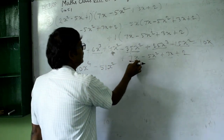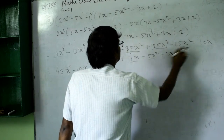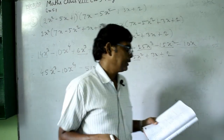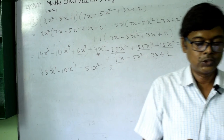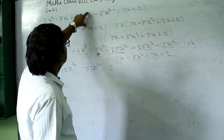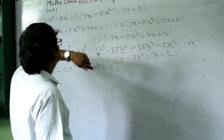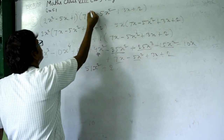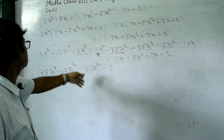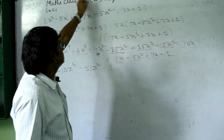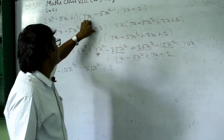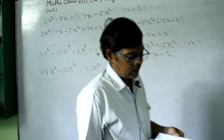After combining all like terms, the x terms cancel out (10x minus 10x equals 0), leaving the constant 2. The teacher notes that the problem likely has a typo — 7x should be 7x³ based on the answer in the book. Students should substitute 7x³ and resolve. This concludes Exercise 5.1.